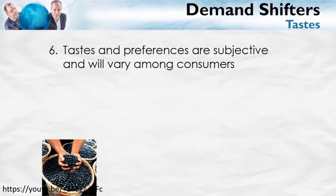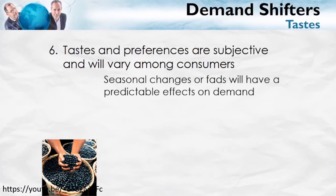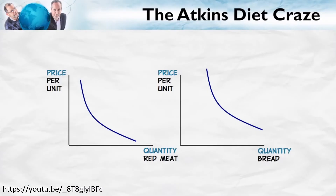Taste is an important demand shifter, and tastes change all the time due to seasonal changes, fashions, or fads. Demand for boots rises in October, for swimsuits in June, and for sunscreen in summer. The Atkins diet said that carbohydrates make you fat, so the way to lose weight was to consume more protein and red meat. This increased demand for red meat and decreased demand for bread. When Atkins later had a heart attack, demand for the Atkins diet went down, reversing both of those effects.